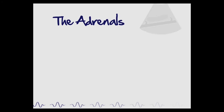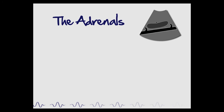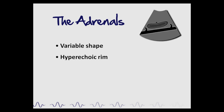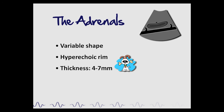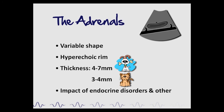As seen in the previous ultrasound loops, the shape of the adrenal glands varies according to the side and image plane used. It can also vary in shape among animals — for example, it is flatter in large dogs and more rounded in small dogs, and even more rounded in cats. Additionally, a thin hyperechoic rim may be present at the junction between the medulla and cortex in normal dogs. Measurement of its dorsoventral thickness is most representative of its size. Normal adrenal glands vary between 4 and 7 mm in dogs and between 3 and 4 mm in cats. The impact of the different types of endocrine and other disorders on the adrenals must be understood when examining these glands and interpreting their size.